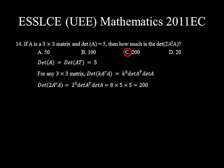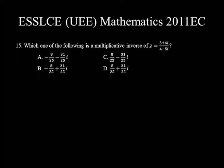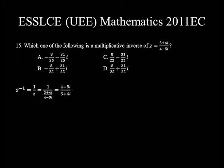Question number 15. Which one of the following is a multiplicative inverse of Z = (3 + 4i) / (4 − 5i)? The multiplicative inverse is 1/Z = 1 / [(3 + 4i)/(4 − 5i)] = (4 − 5i)/(3 + 4i). Multiply both the numerator and denominator by the conjugate of the denominator. The sign in front of the imaginary part of the denominator is positive, so the conjugate of 3 + 4i is 3 − 4i.